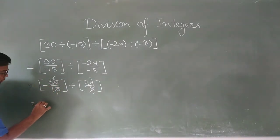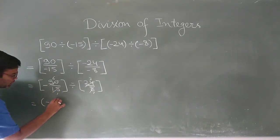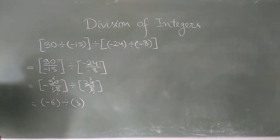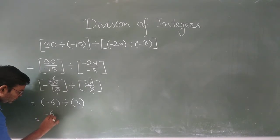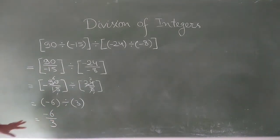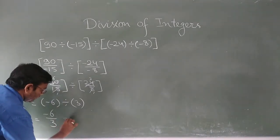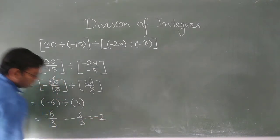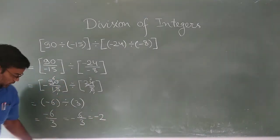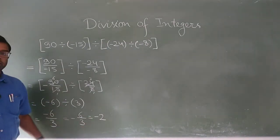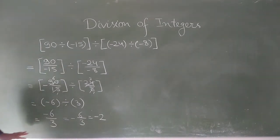So now we have minus 6 divided by 3. We compute minus 6 divided by 3, which equals minus 2. So the final answer to this complex expression is minus 2.